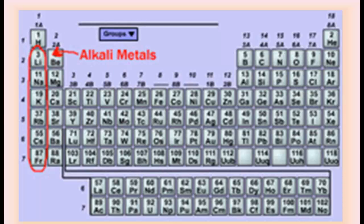In some periodic tables, hydrogen is not placed in any group, as it is treated as a very special element and placed alone at the head of the periodic table. However, both alkali metals and hydrogen have a similar s-block electronic configuration with one electron as the valence electron. Hydrogen can lose its only electron to form a hydrogen ion, H⁺, which resembles the alkali metals that yield M⁺ ions.